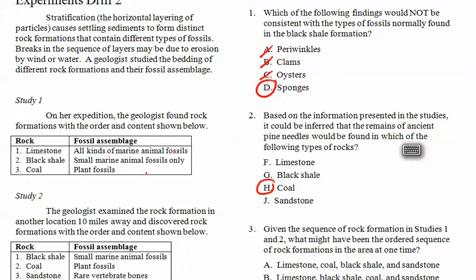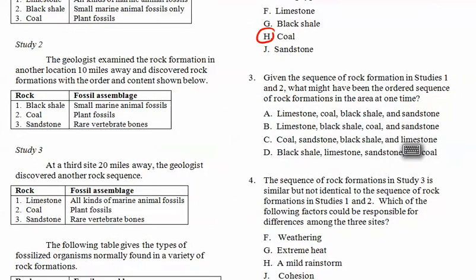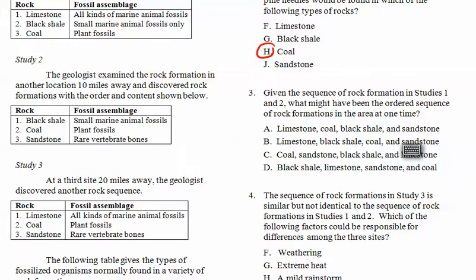So, it's got marine, marine, vertebrate, none of that. Given the sequence of rock formation in studies one and two, what might have been the ordered? So, you look at the one, two, and three and you put them together. It goes limestone, black shale, coal, black shale, coal, sandstone, limestone, and black shale, coal, and sandstone. That's from putting this to this and then actually looking at this and making sure limestone, then coal, then sandstone, black shale fits in here, limestone fits in here. You got to kind of think that one through. There's no neat, easy way to look at that and say, oh, that's obvious.